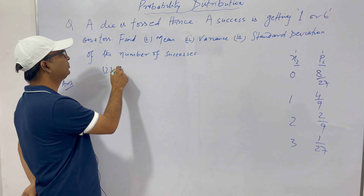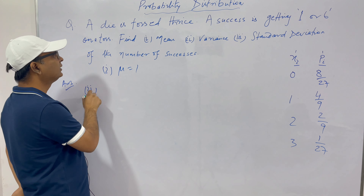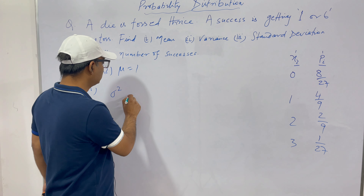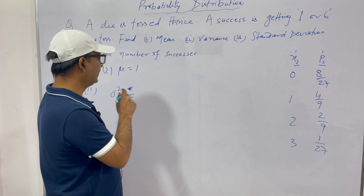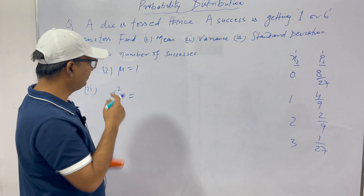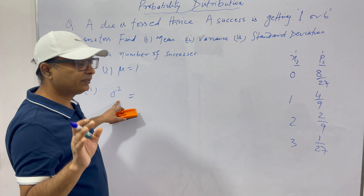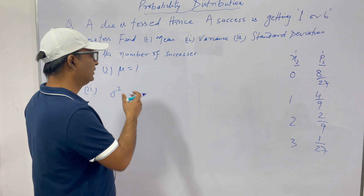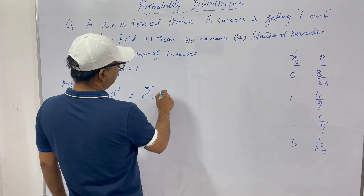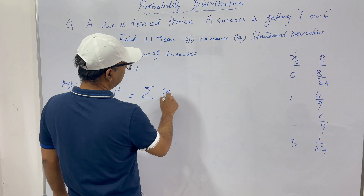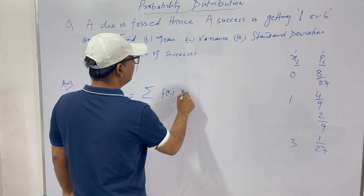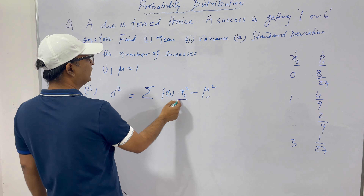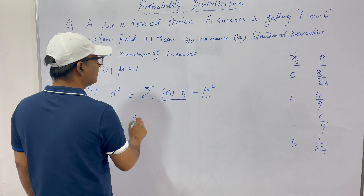We have found the first answer: μ = 1. Now we are doing the second part — variance. The variance formula, as discussed in the last class, is given by: Variance = Σ Pi × Xi² − μ². We have μ = 1, so μ² = 1. Now let us find Σ Pi × Xi².